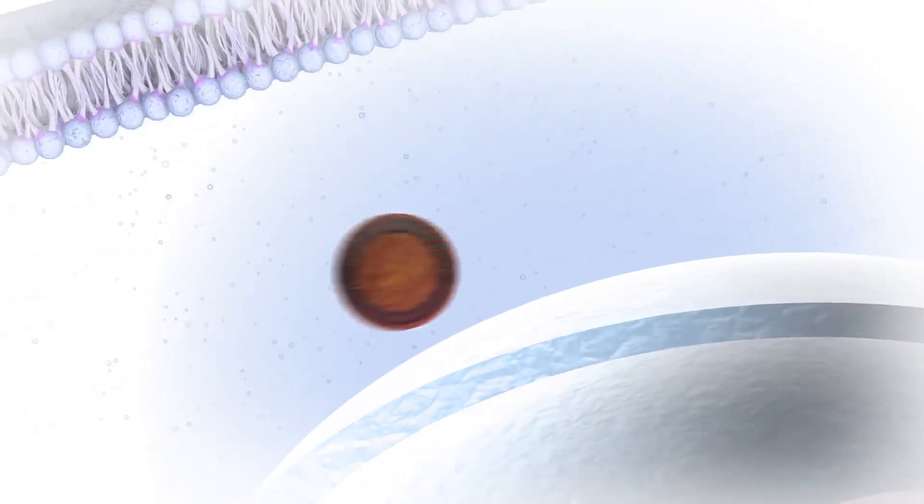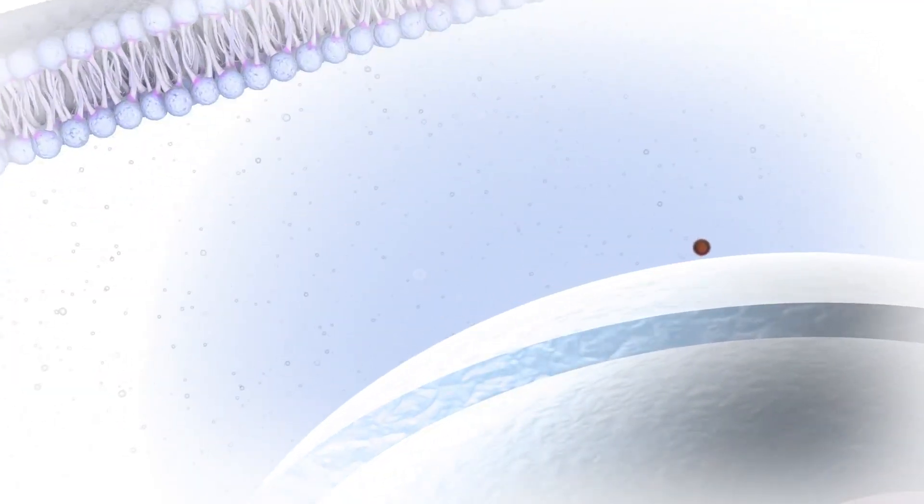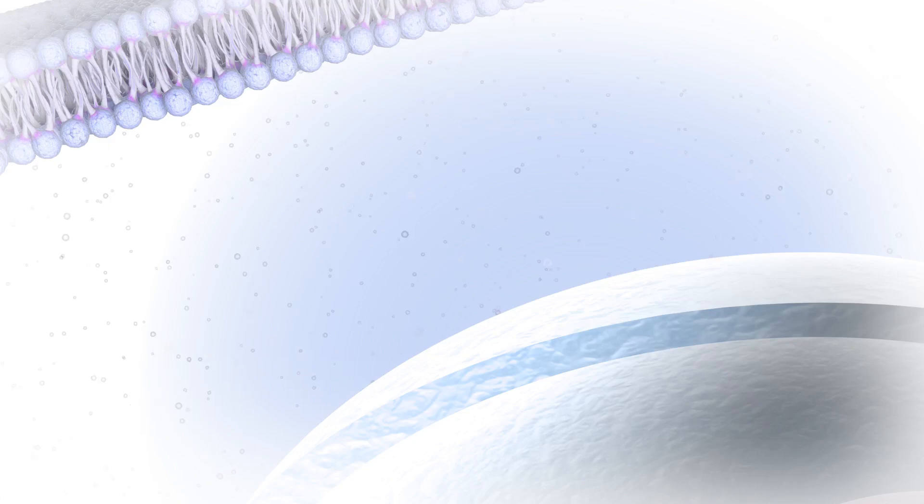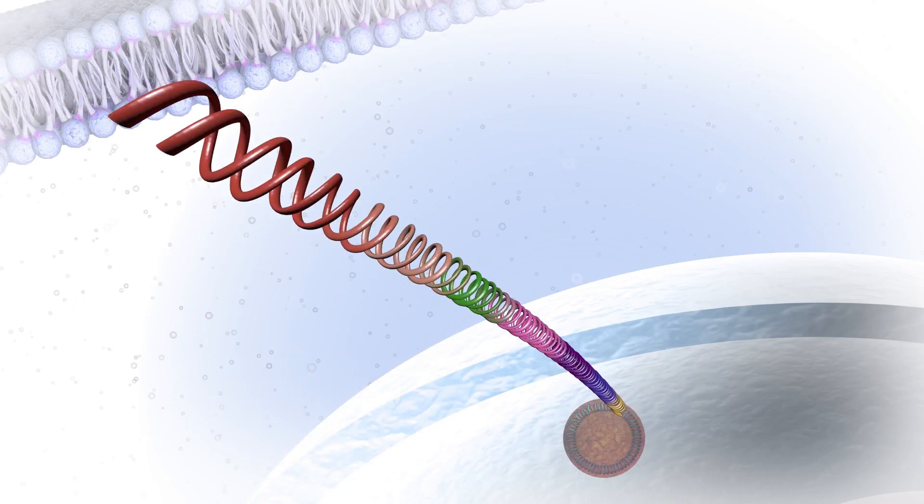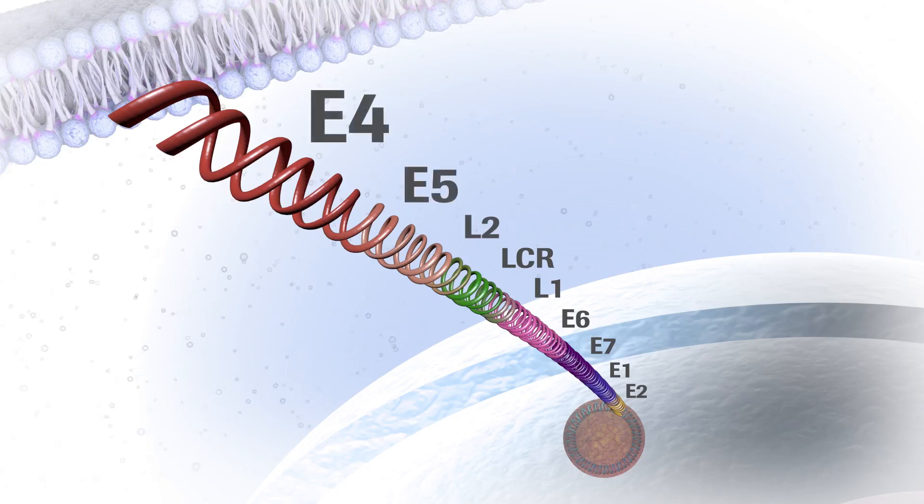the viral capsid is shed and the circular HPV genome is shuttled into the nucleus of the cell. As mentioned earlier, the DNA from the HPV virus contains eight different genes. Early genes are designated as E and late genes are designated as L.